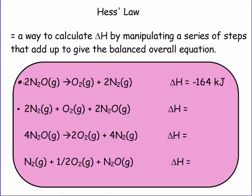Here we're going to change the reaction. This reaction is very similar to the top one — we have two N2O's, one oxygen as a product and one oxygen as a reactant, two nitrogens as products and two nitrogens as reactants. So what they did was reverse the reaction: the products are now reactants and the reactants are now products. When you reverse the reaction, you reverse the delta H sign, so this reaction has a delta H of 164 kilojoules.